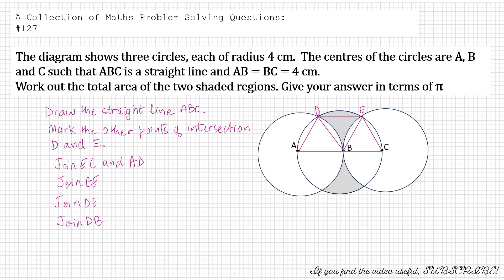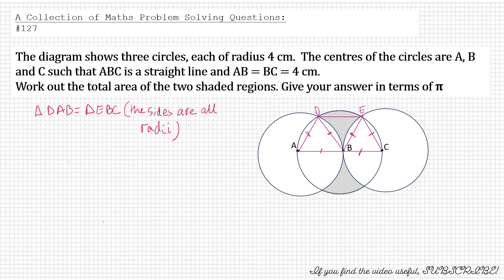We will be using that to really work out the answer to the area of the shaded parts. Now triangle DAB, as I explained, is equal to angle EBC. All sides are the radii. And triangle DBE is also equilateral.